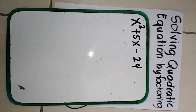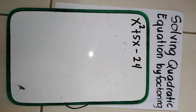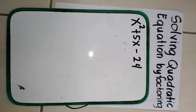We are now solving quadratic equations by factoring. In our example, we have x squared plus 5x minus 24. Recall from your factoring lesson in grade 8, this is in the form ax squared plus bx plus c, where a is equal to 1.